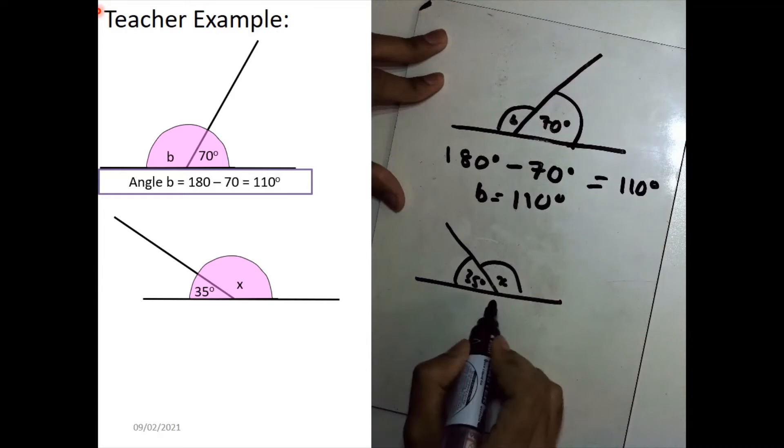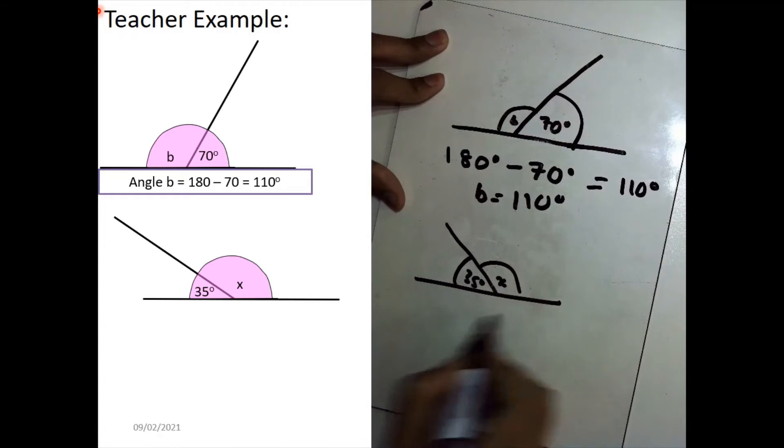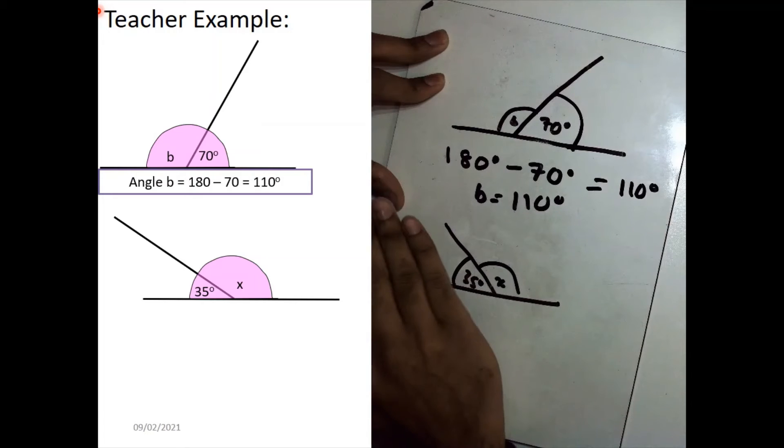Now, to work out this angle over here, X, once again, we know that the straight line in total is 180 degrees. We know what the 35 degrees is, so we can just literally think about taking away, physically taking it away from the entire 180.